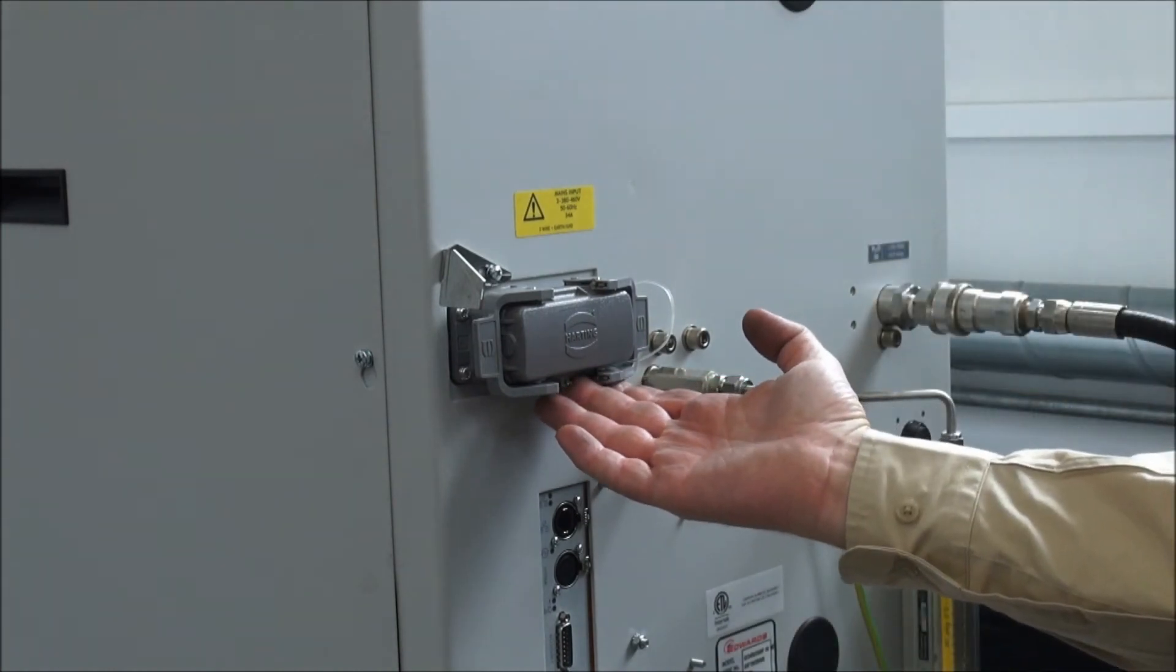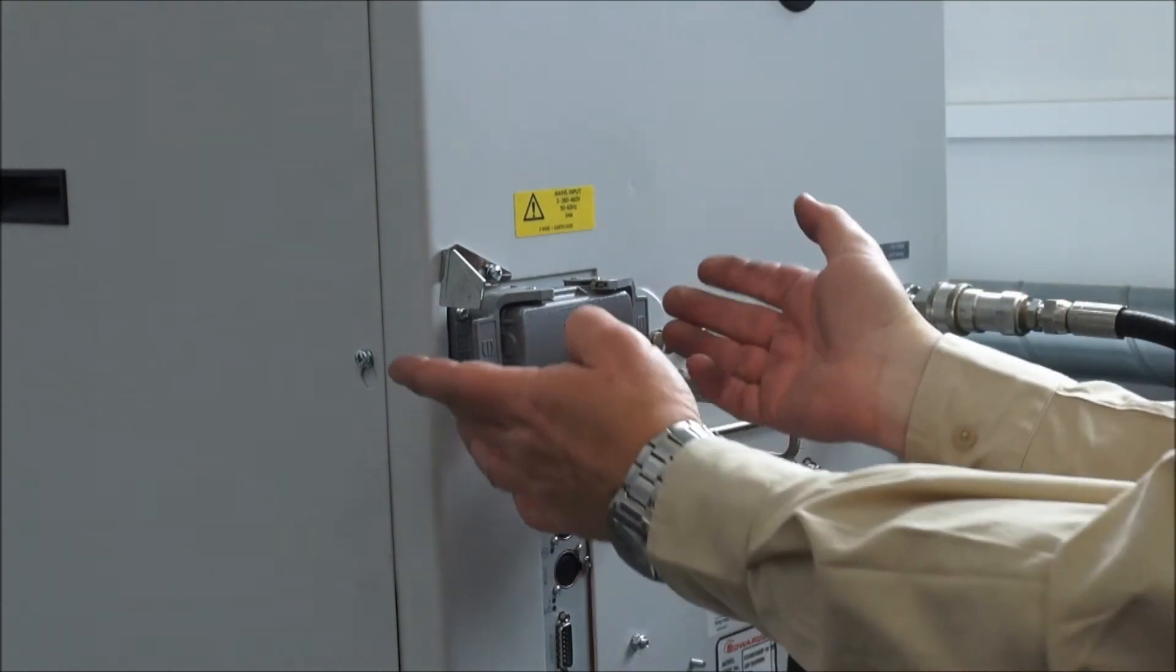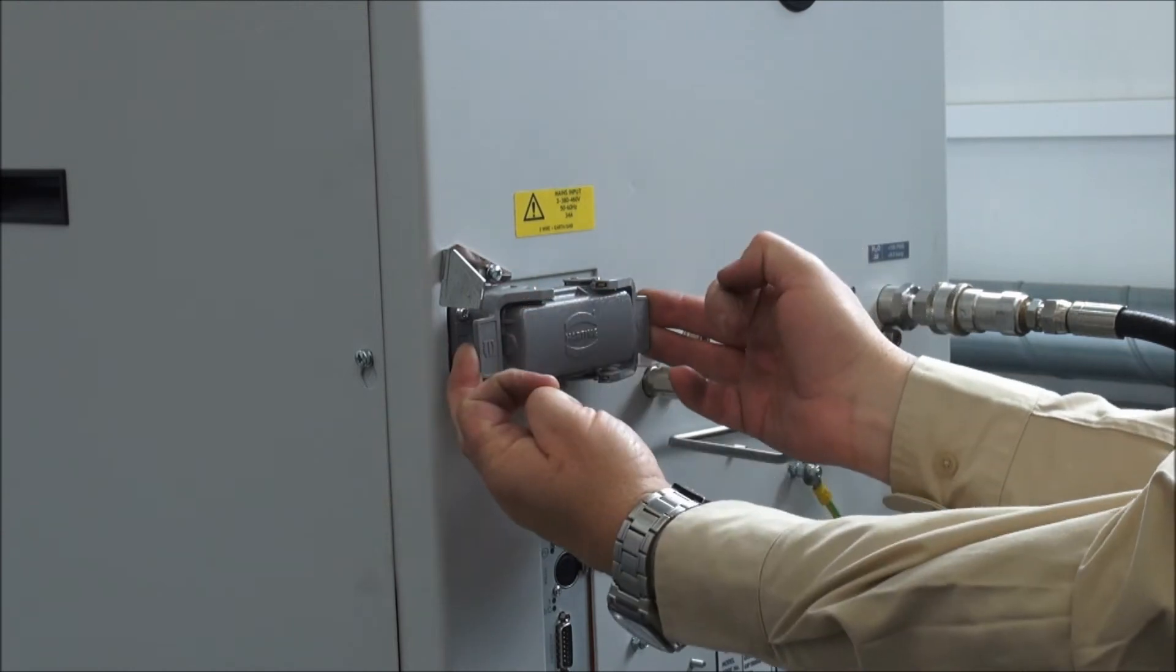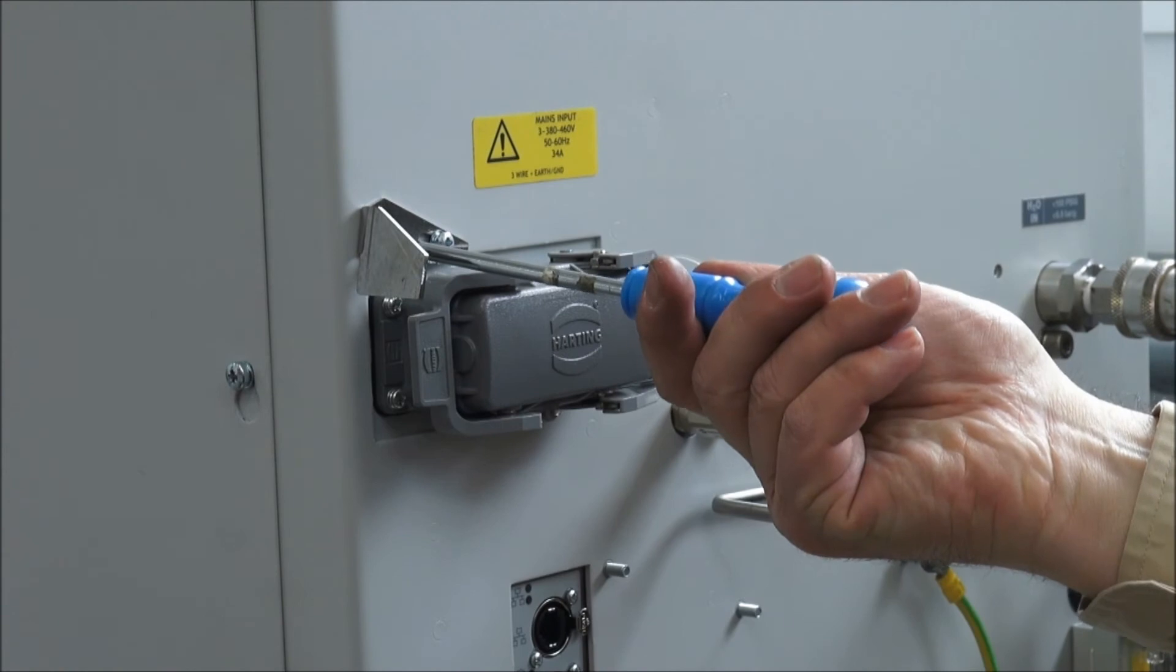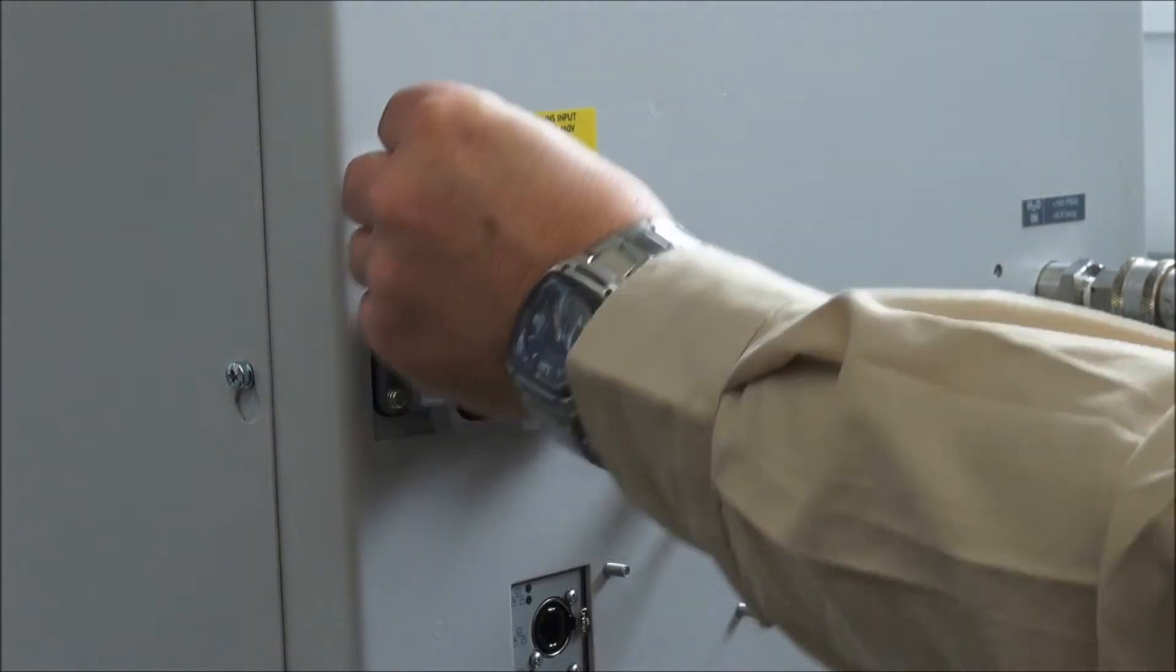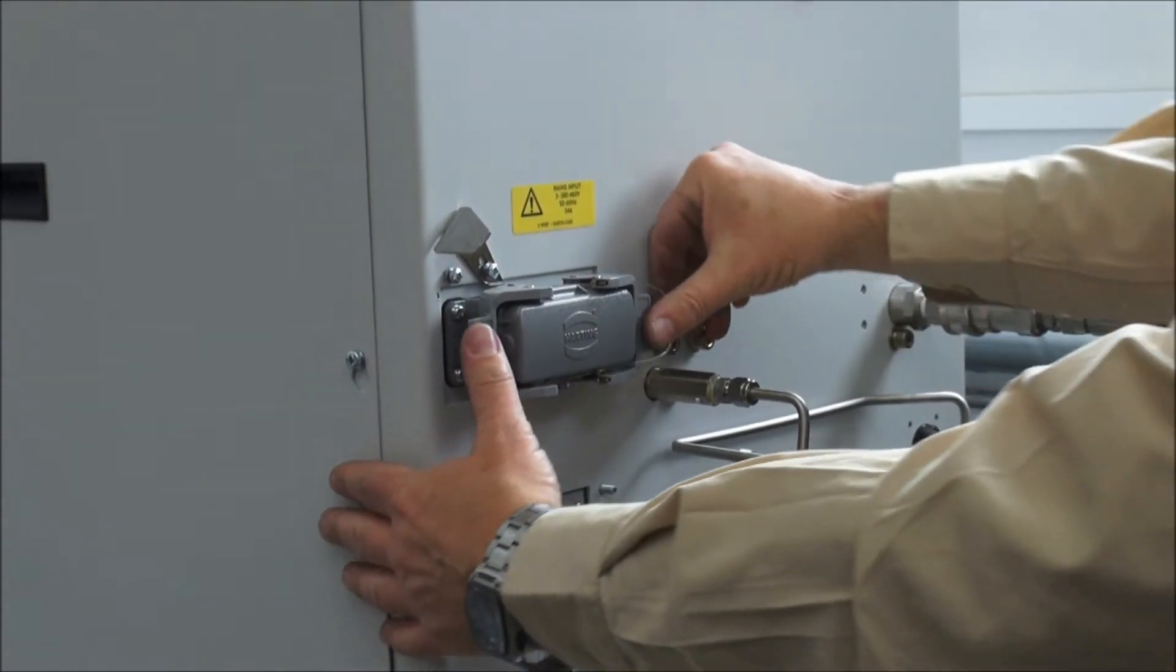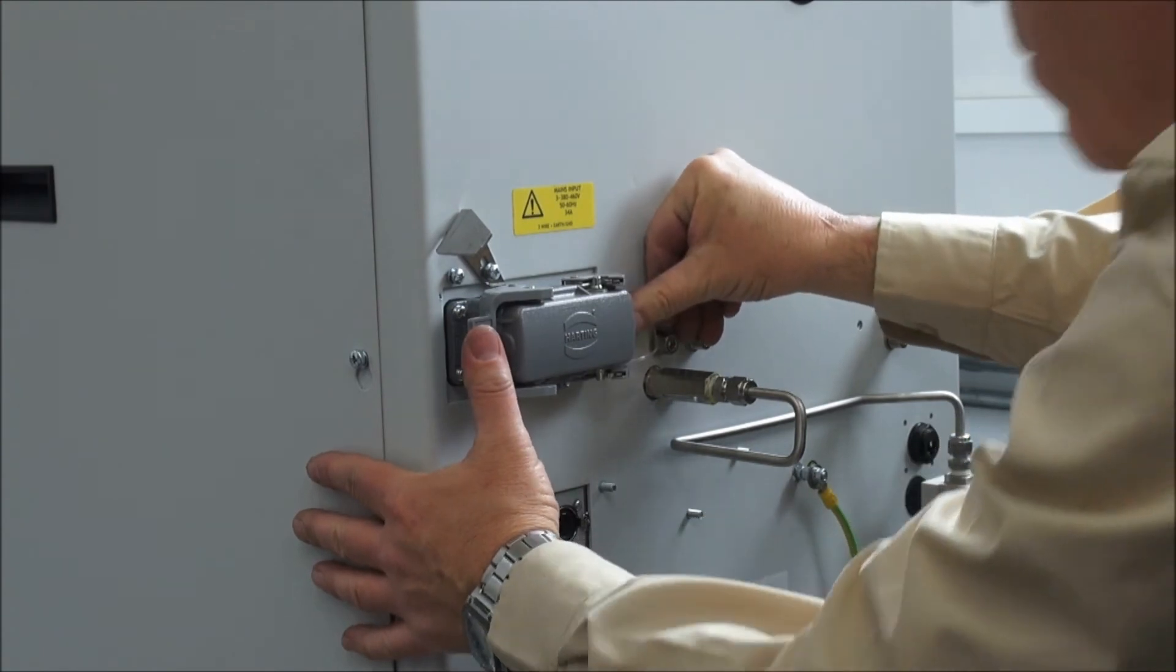This is the Harting three phase power receptacle on the back of the GXS. There are two locking clips securing the cover. There is also a safety tab which should be loosened and pushed out of the way before the left clip can be released. Push back the locking clips to release them and then free the cover.